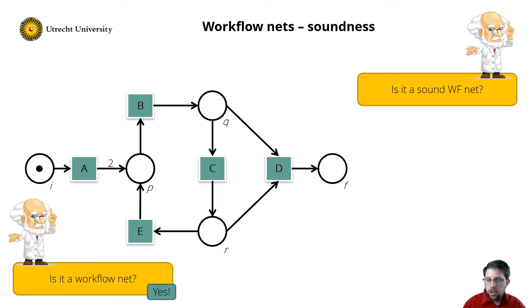And now is it a sound workflow net? I play the token game again. Transition a is enabled. Firing it results two tokens in place p. So now I can fire transition b, leaving a token in p and one in q. So that means that transitions b and c are enabled. So now I fire transition c. So it consumes the token in place q and produces a token in place r. Now transitions e and b are enabled.